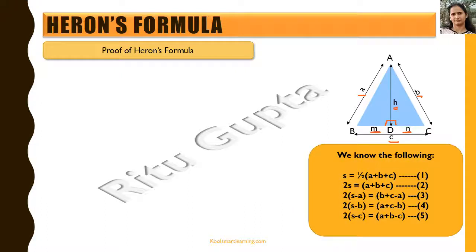We know that the semi-perimeter of the triangle is given by S = (A + B + C) / 2, or equivalently 2S = A + B + C. Subtracting 2A from both sides gives 2(S - A) = B + C - A. Similarly, 2(S - B) = A + C - B, and 2(S - C) = A + B - C. These are the equations we are going to use.